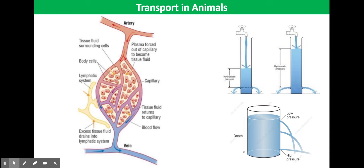At the arterial end of the capillary network, the blood is at relatively high hydrostatic pressure. This hydrostatic pressure tends to push the blood fluid out of the capillaries through the capillary wall. The fluid can leave through the tiny gaps between the cells in the capillary wall. The fluid that leaves consists of plasma with dissolved nutrients and oxygen. All the red blood cells, platelets, and most of the white blood cells remain in the blood, as do the plasma proteins, as these are too large to be pushed out through the gaps in the capillary walls.